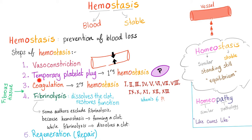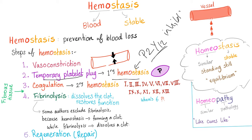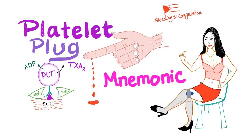Hemostasis has many steps. Temporary platelet plugs, also known as primary hemostasis. When we talk about the P2Y12 receptor, we're talking about the temporary platelet plug or primary hemostasis. When we talk about P2Y12 inhibitors, we're talking about inhibiting primary hemostasis. If you have problems understanding the platelet plug or primary hemostasis, please watch the video about the mnemonic — it's in the playlist.